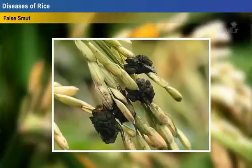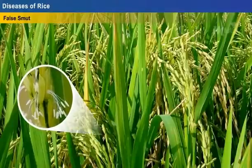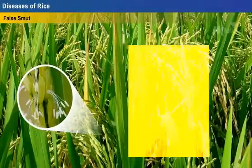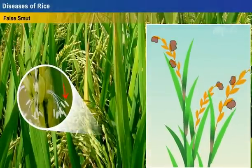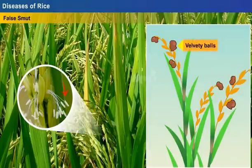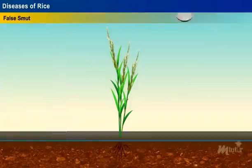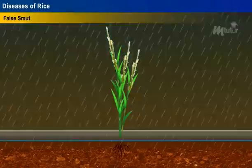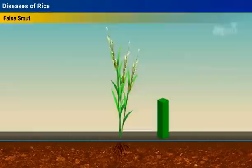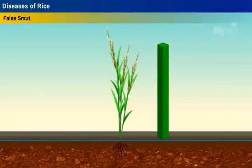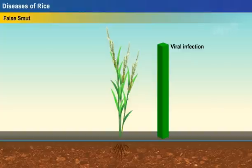False smut is caused by the fungus Ustilaginoidea virens. The symptoms are visible only at the flowering stage. The fungus attacks the young ovary of an individual spikelet and converts it into large velvety balls or smut balls. Low temperature, high relative humidity, and rainfall during the flowering stage increase the incidence of infection.